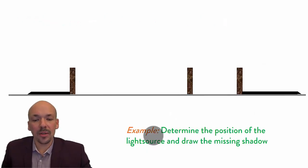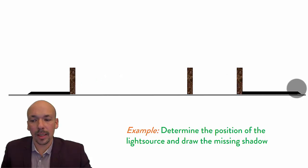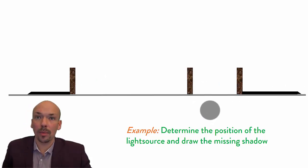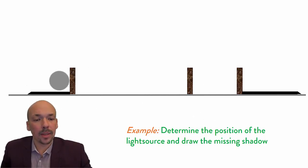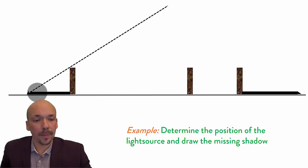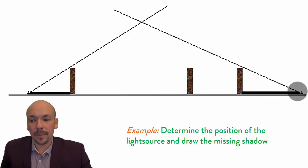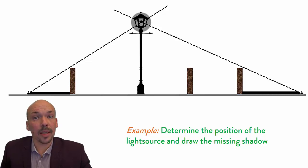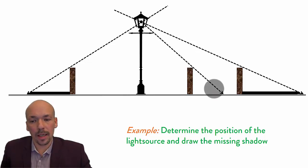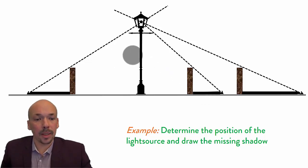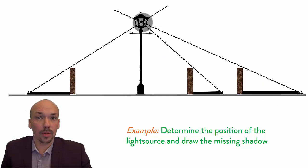A more difficult problem: determine the position of the light source and draw the missing shadow. We have three walls — two already have shadows, and one does not. To find the light source, draw a line from each existing shadow back through the top of its wall and extend it. Both lines connect at a single point — that is where the light source is. Once you know the light source position, you can draw a line to the top of the third wall and add the missing shadow. This is how you solve this type of question.